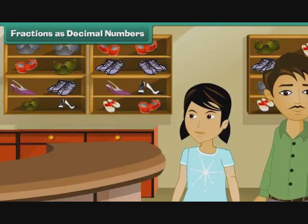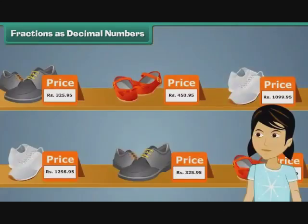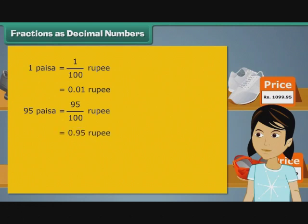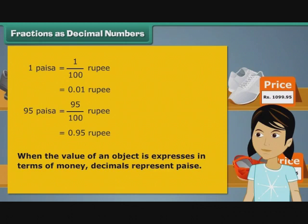Arpita went with her father to buy her school shoes. Prices of footwear in the store were expressed as decimal numbers. She wondered what the decimals in the prices meant. 100 paise make 1 rupee. In other words, 1 paise is 1 by 100th of a rupee. It can also be written as 0.01 rupee. Therefore, 95 paise form 95 by 100th of a rupee. We can express 95 paise as 0.95 rupee. Therefore, the decimals in the footwear stood for paise. When the value of an object is expressed in terms of money, decimal represents paise.